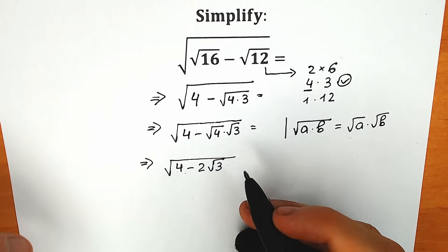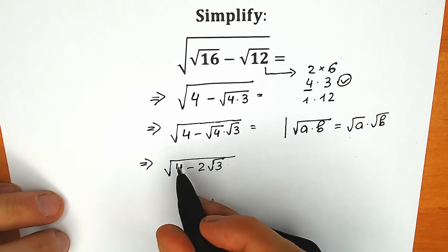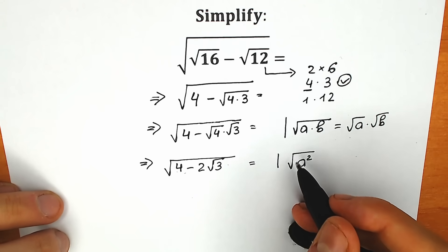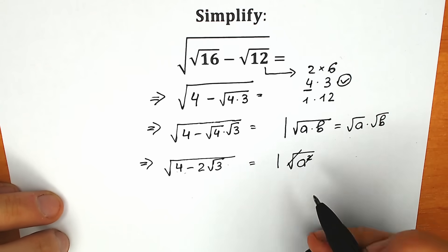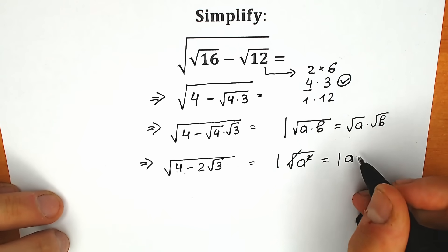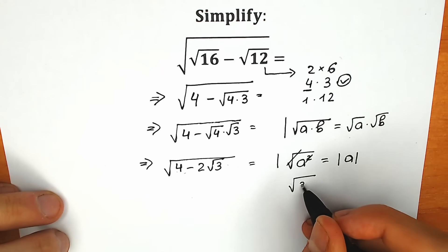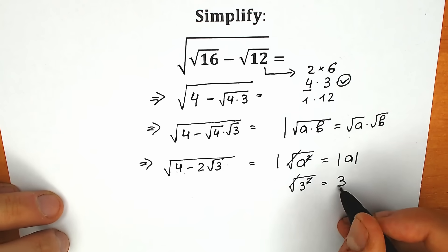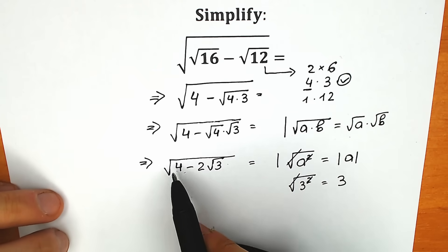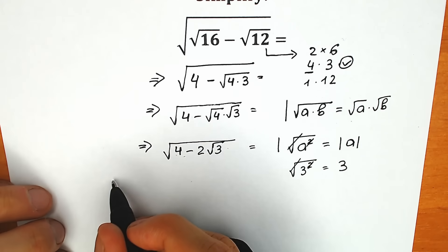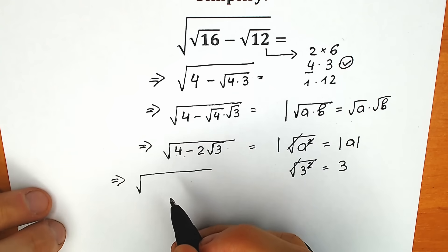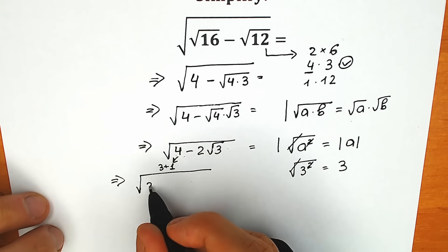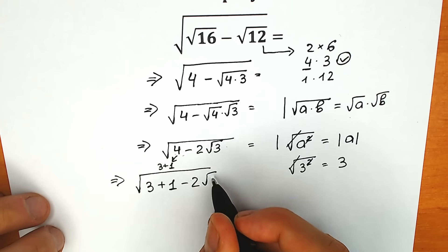But what is the main idea? The main idea is to create a square inside of a square root sign. When you have square root of a squared, everyone knows we can cancel the square root sign, and as a result we have the absolute value of a. So instead of this 4, let's write 3 plus 1. So we have 3 plus 1 minus 2 square root of 3.